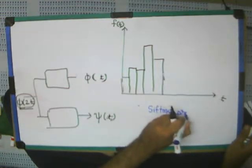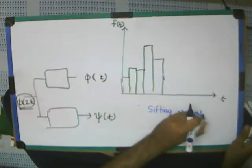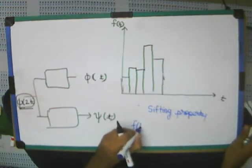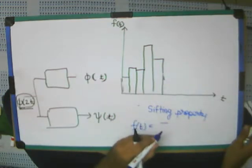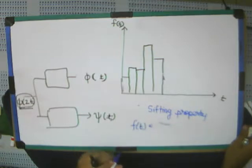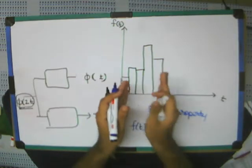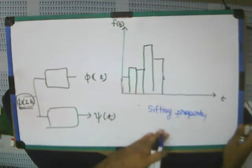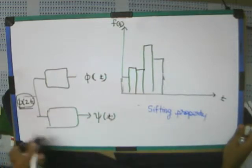Have you heard something like this before? Have you seen something called sifting property? In sifting property, the signal F T is written as the sifted form, it is written in form of the cutted form of this delta. Just read it in some book. So, it is similar to sifting property, very similar.